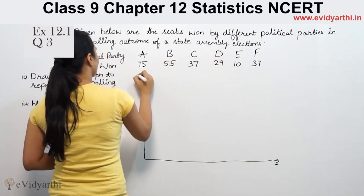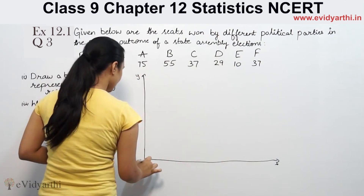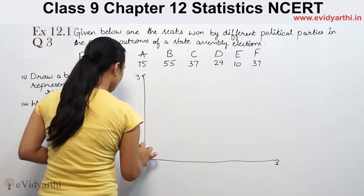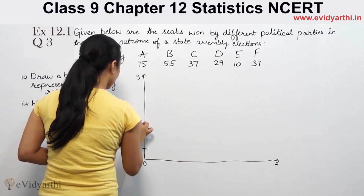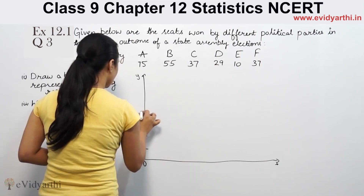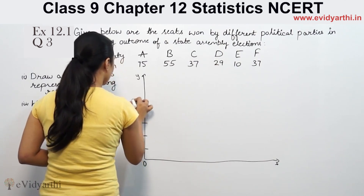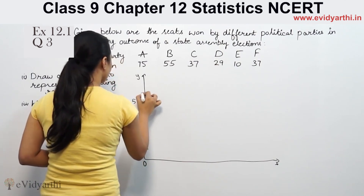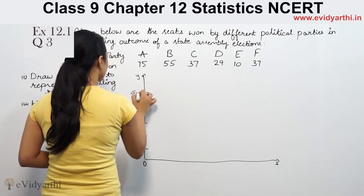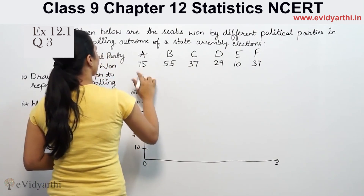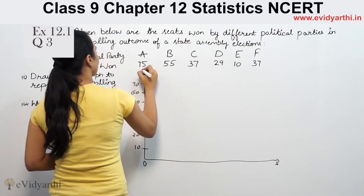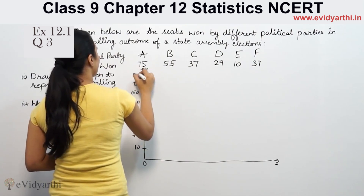This is 0, 10, 20, 30, 40, 50, 60, 70, and this is 80. So the y-axis goes from 0 to 80 in increments of 10.